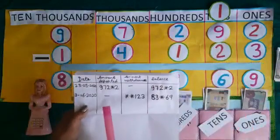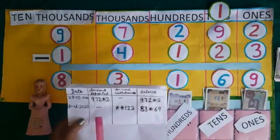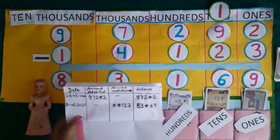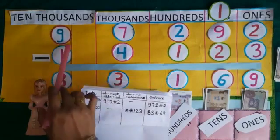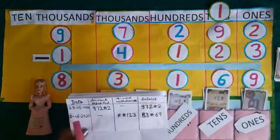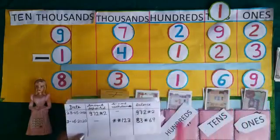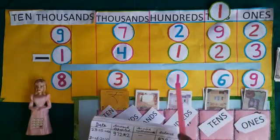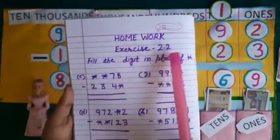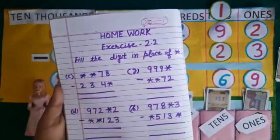In this way, we have found out the amount of withdrawal and the balance amount. On May 23rd, 2020, there were 97,292 rupees in her account. On June 3rd, 2020, her father had withdrawn 14,123 rupees, and now 83,169 rupees are there in her account. Now, your homework is exercise 2.2 — fill in the digit in the place of the star. You have to do all these sums in your notebook. Thanks.